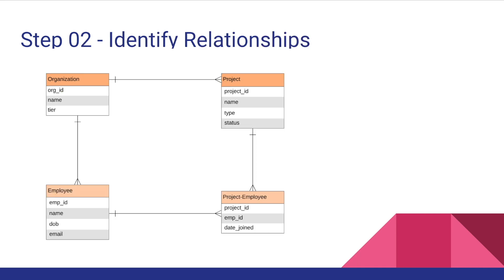In the next step we'll further break down these relationships. Step number two: identify relationships. We've broken down the many-to-many relationship into two one-to-many relationships by introducing another entity called project employees. Between employees and project employees there's a one-to-many relationship, and between projects and project employees again a one-to-many relationship. At this stage we can already identify that we need an inverted index to query one side of the relationship — specifically, to find the employees that are part of a project.